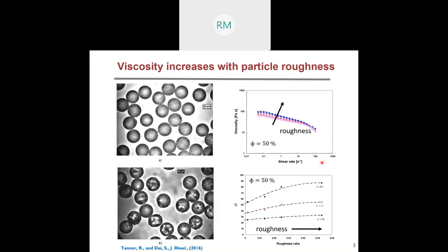But that is not the case in dense suspensions, as has been shown by Tanner and Dye. In these experiments they artificially roughened particles using a grinding process, and what they found is that increasing the particle roughness actually increases the suspension viscosity.